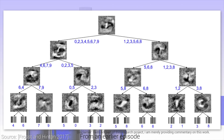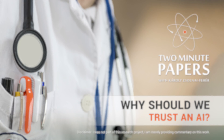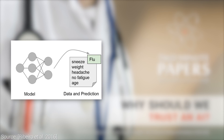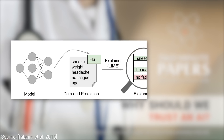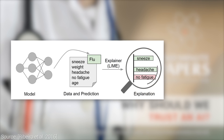For instance, imagine that a neural network would look at all the information we know about a patient and tell us that this patient likely has the flu. And in the meantime, it could tell us that the fact that the patient has a headache and sneezes a lot contributed to the conclusion that he has the flu.